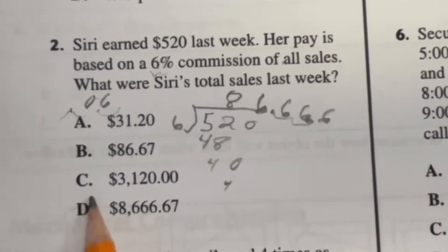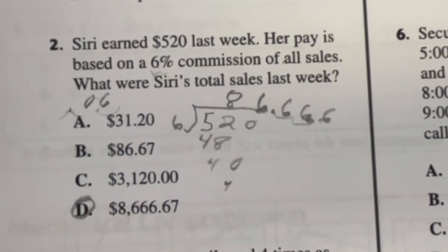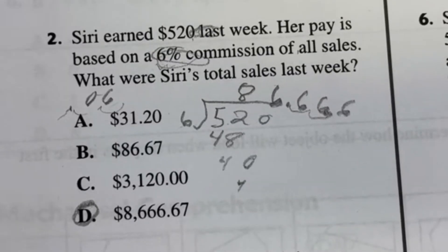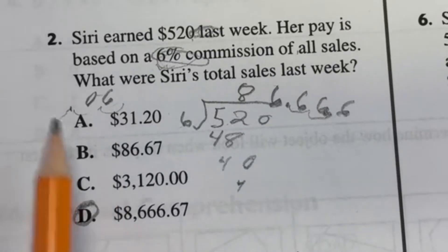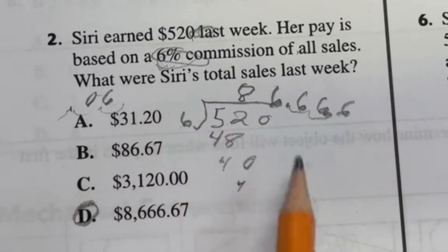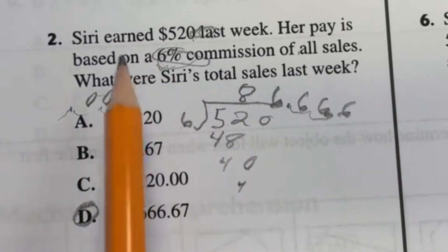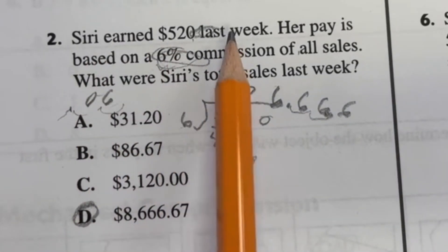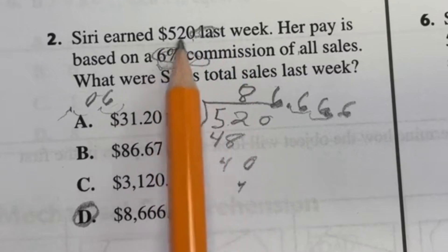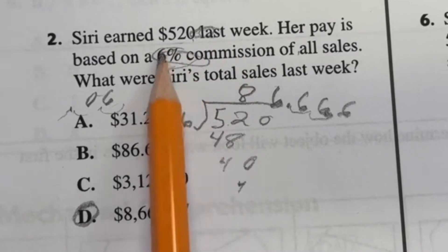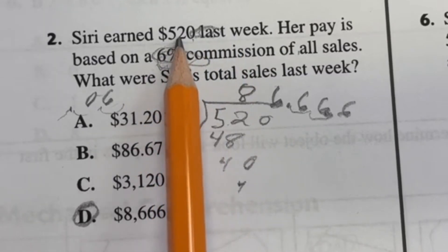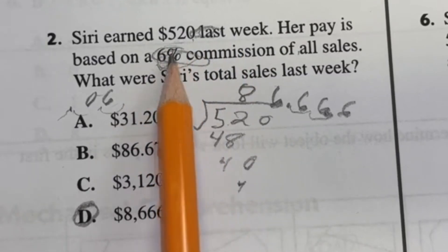So our actual answer is D. In my last video I mentioned there are quicker ways to do number two. This question said she earned $520 last week, and that is six percent of the total number she would make.